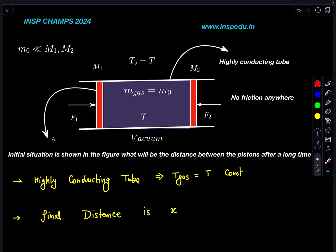Here, as we allow these pistons to move, the gas will not be in thermodynamic equilibrium—that equilibrium will be disturbed. However, if you see what is going to happen, since we have a highly conducting tube, temperature of gas is going to be constant. Let's say final distance is X.